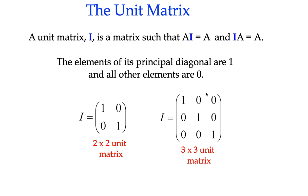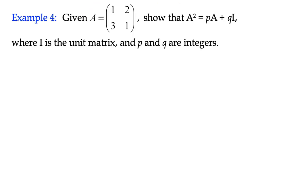So why would we use it? What's the point in it? Well, there is a point to it. There's various applications of it, but here is a question, just a little bit of a theoretical matrix question. It allows us to do a little bit of multiplication and addition. It says, given that matrix A is 1, 2, 3, 1, show that A squared can be expressed as being a multiple of the original matrix A plus some multiple of the unit matrix I, where I is a unit matrix, and p and q are some multiples or integers.